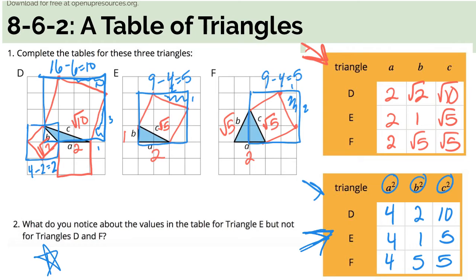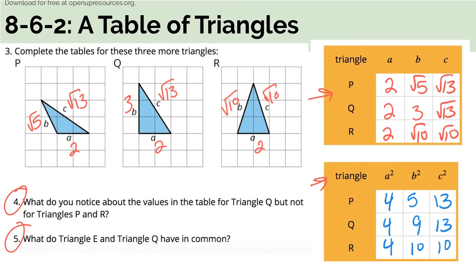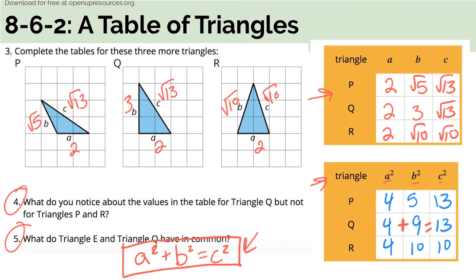The big thing we want to notice here is that for triangle E, if I add together the sides A squared and B squared, it actually ends up equaling C squared. On the next ones, go ahead and fill in both of your tables, then answer numbers 4 and 5. Once you have those tables filled in, for number 4, the big thing you should notice for triangle Q is that A squared plus B squared equals C squared, and that doesn't work for the other ones. What do triangle E and Q have in common? If you take A squared plus B squared, it equals C squared. This is the big thing — this is the Pythagorean theorem. It only works for right triangles, and we're going to be using it a lot in the next few days.